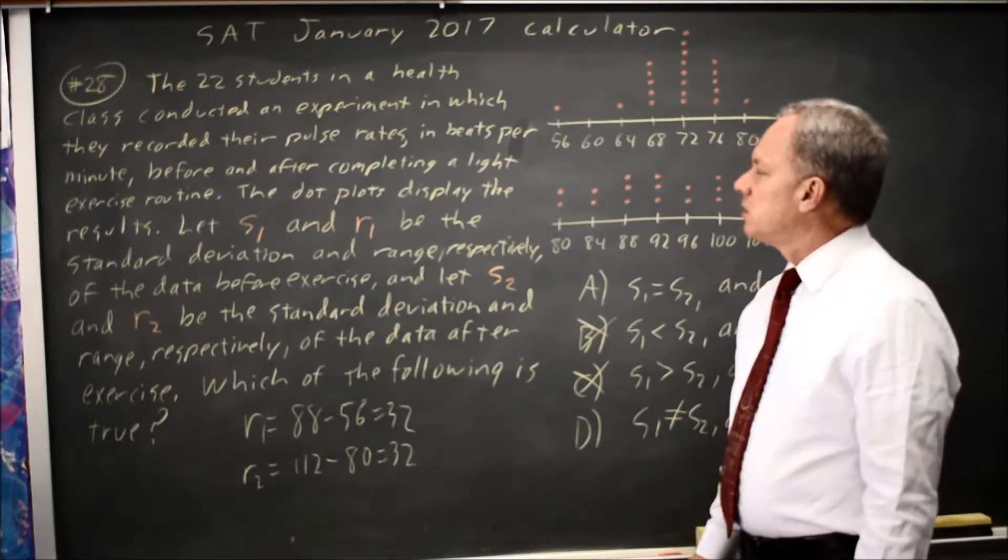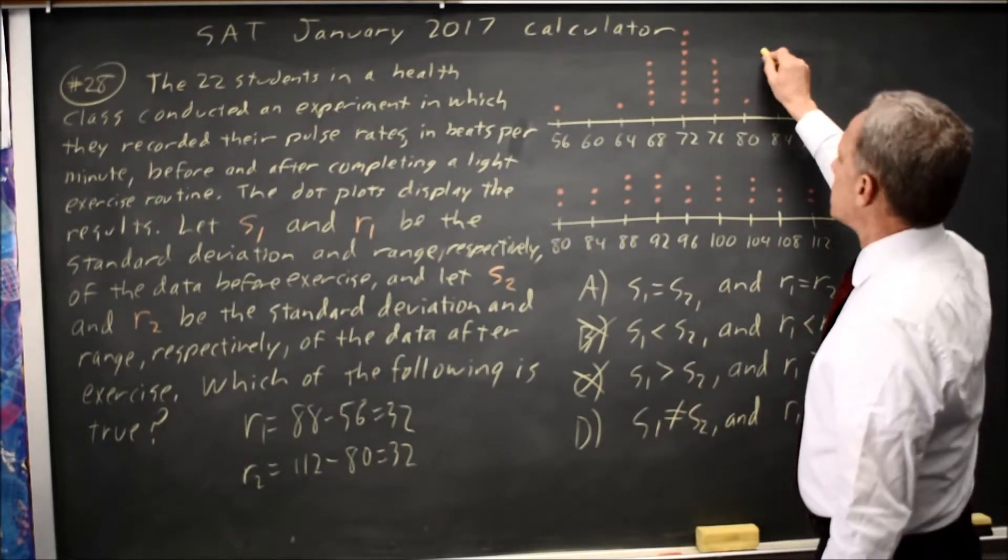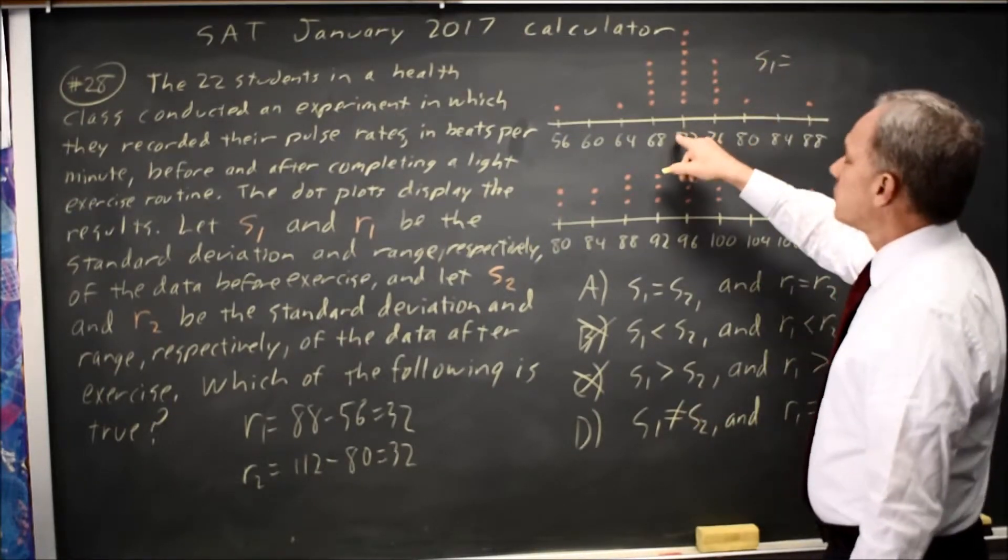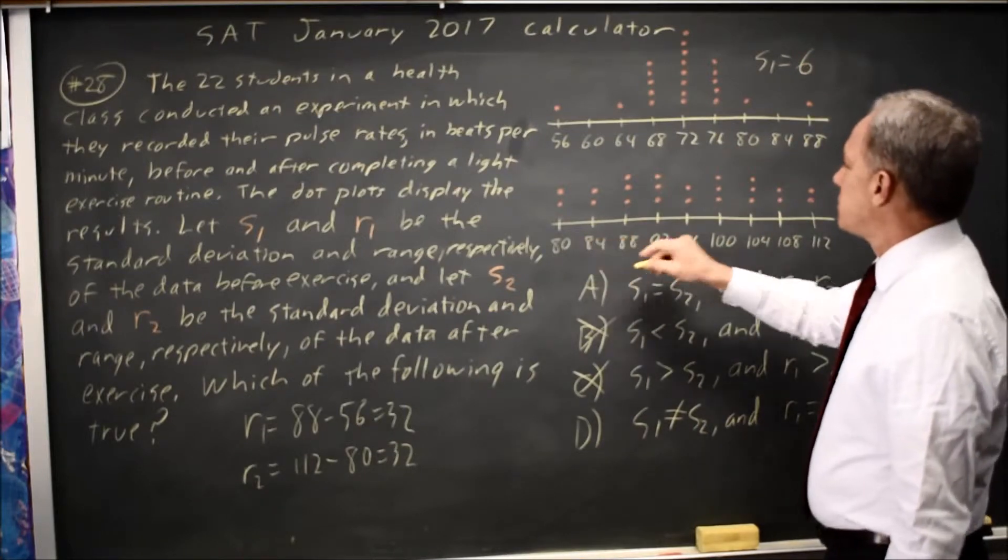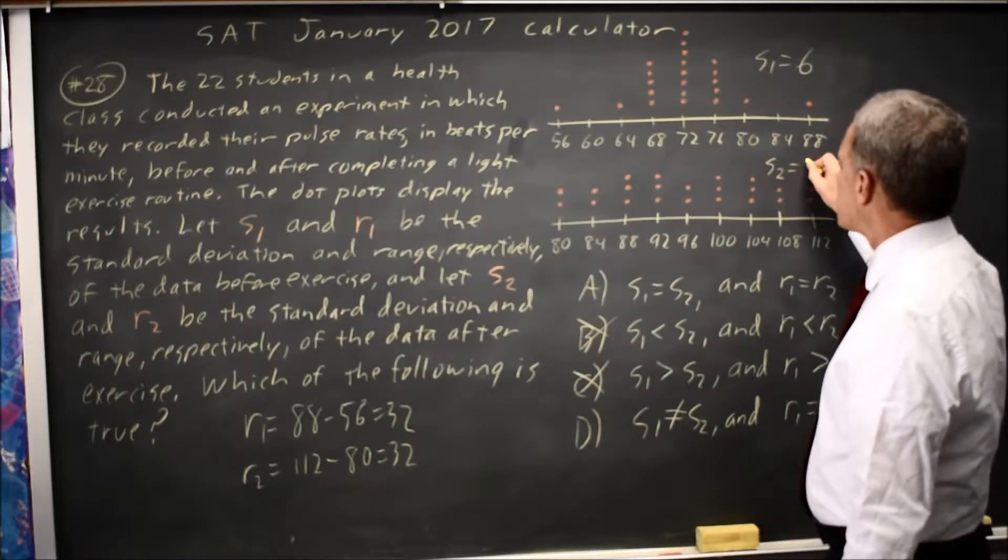Either way, the calculator will then tell you that S1, the standard deviation for the first data set, is about 6. And S2, the standard deviation for the second data set, is about 10.